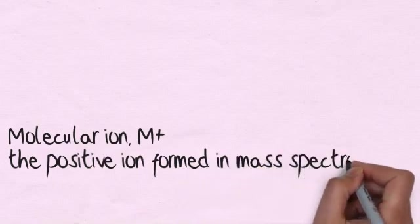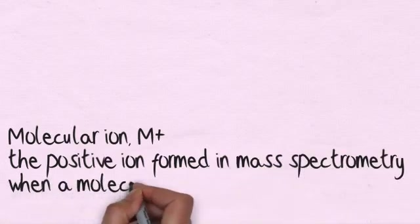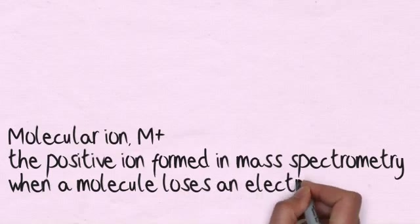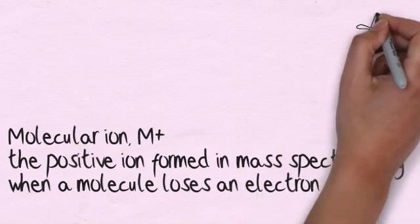The molecular ion peak, M+, is the positive ion formed in mass spectrometry when a molecule loses an electron.